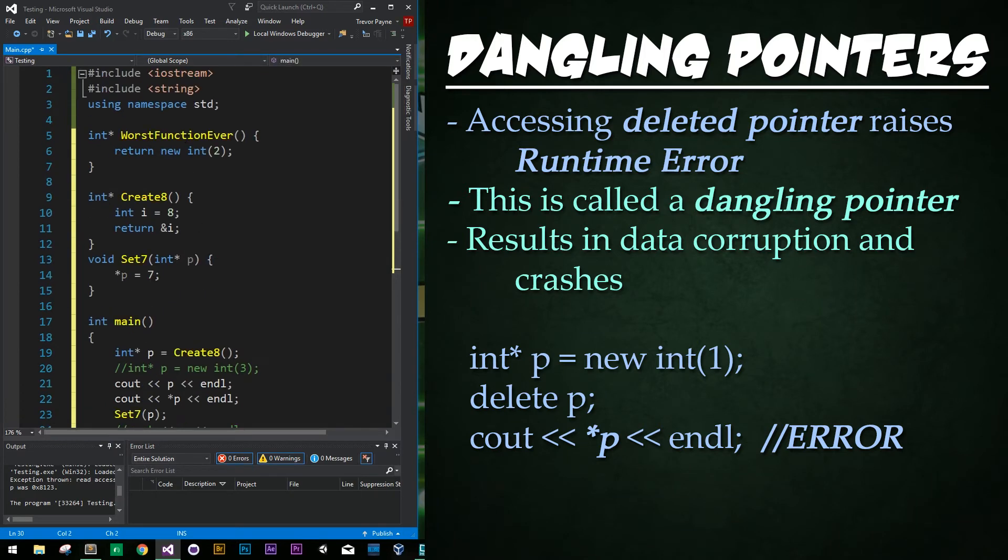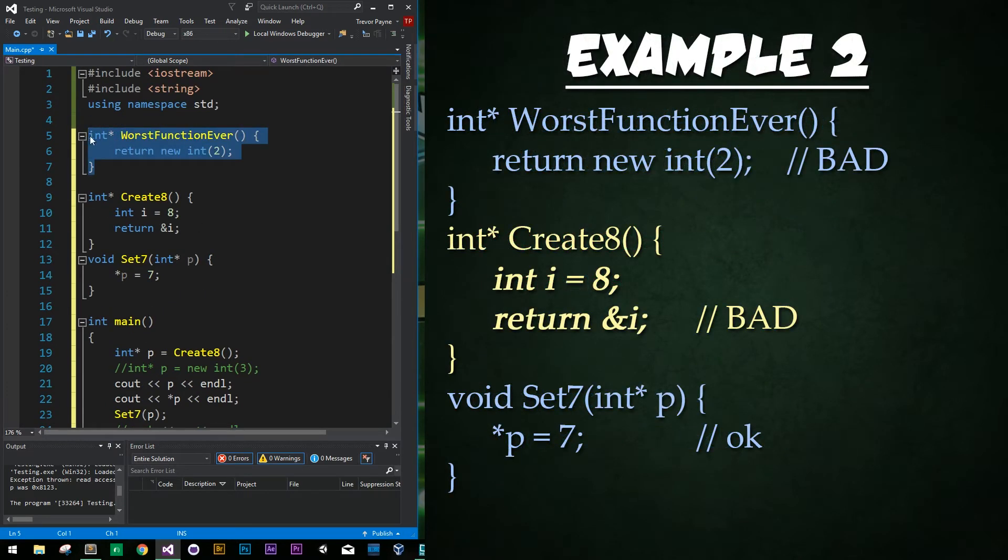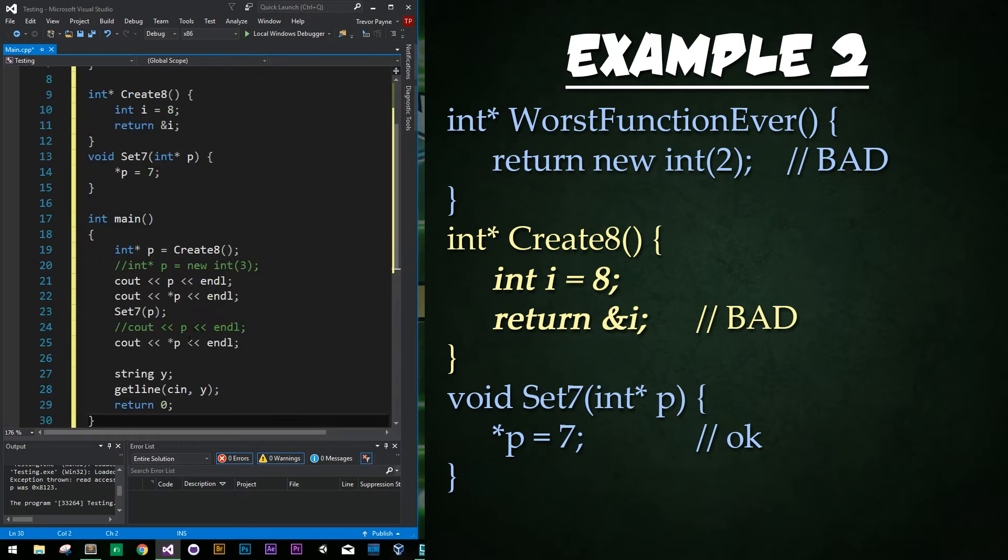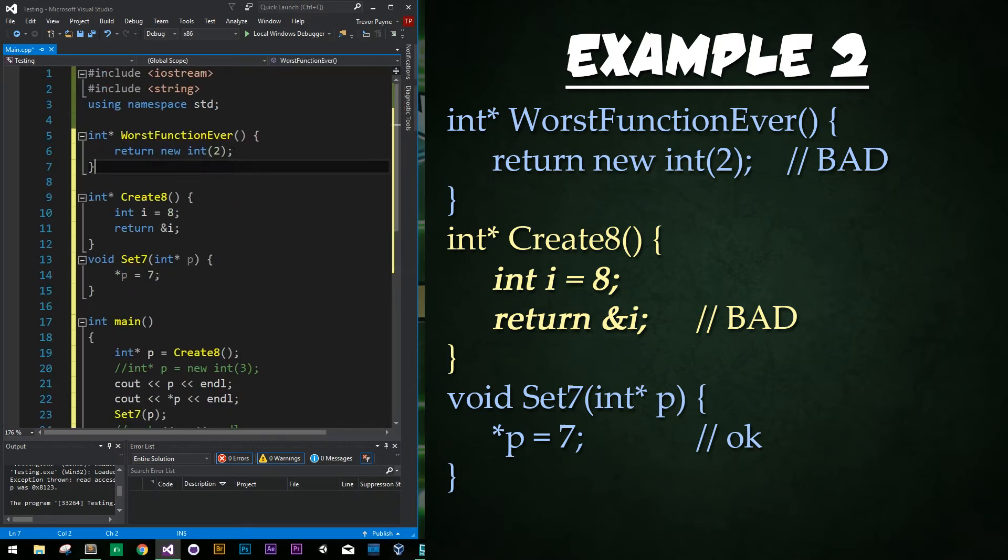So now I'm going to paste in some more code here and the very first thing is I have this worst function ever up top and it is just going to return a pointer to an int and all we're doing is just returning a new instance of an int. Ordinarily with data on the stack the code will be deleted from memory automatically at the end of the code block. With heap memory however it is there for the duration of our program until we manually delete it regardless of where it is created. So dynamic memory created within a function will keep existing after the function ends.